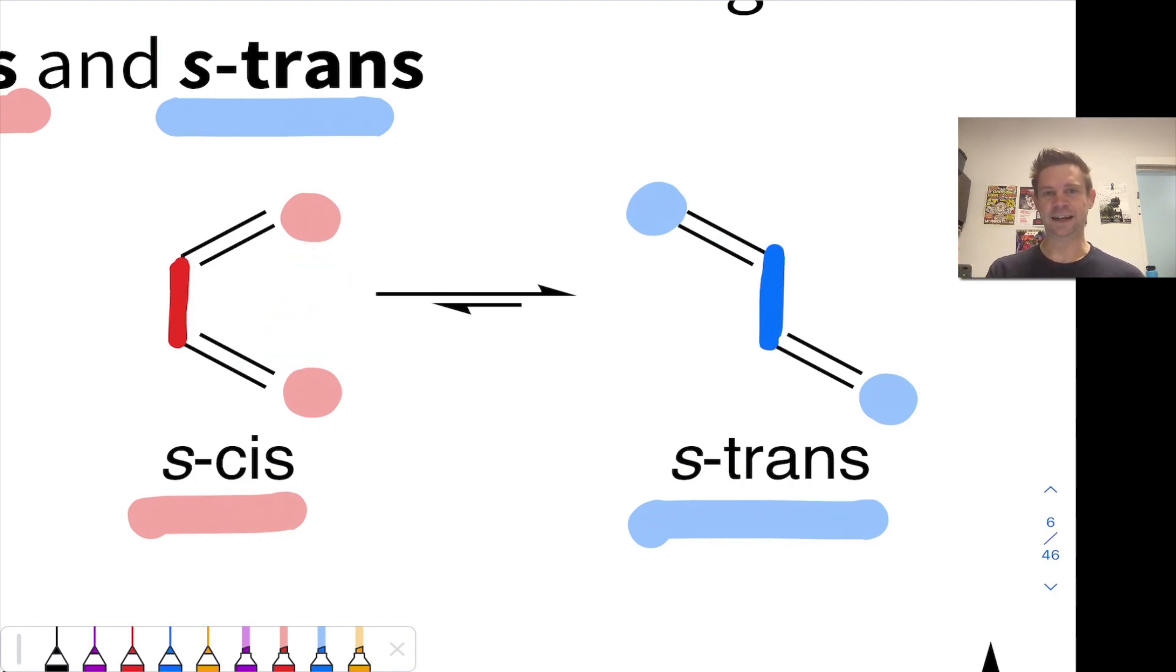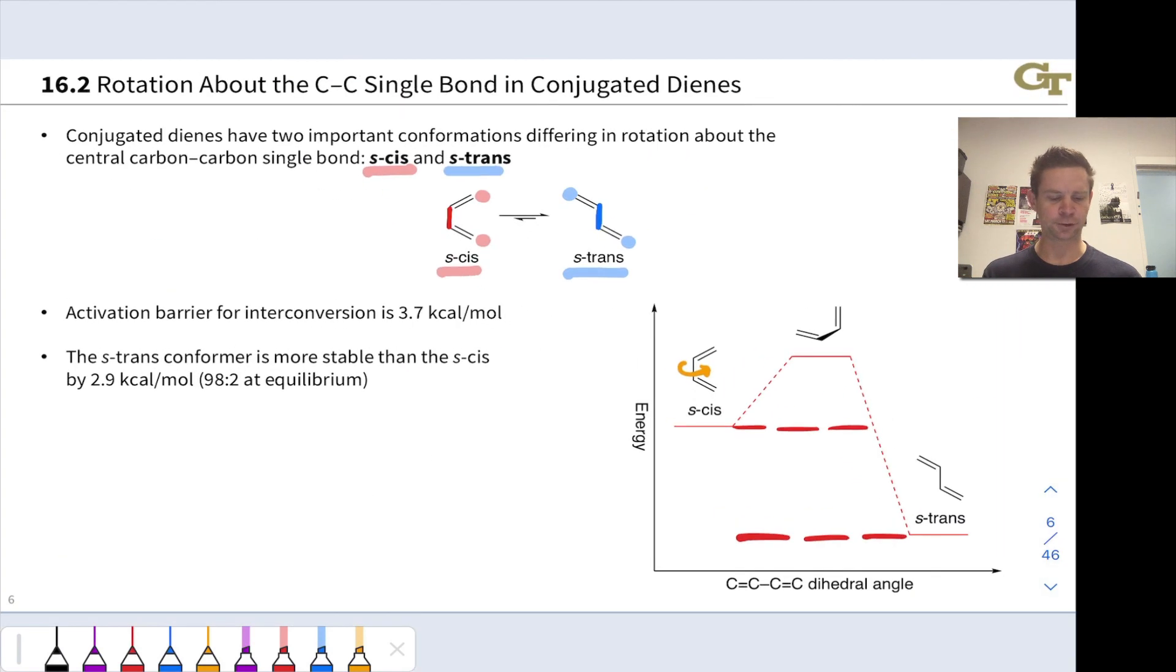We alleviate that steric interaction in the S-trans conformer where one of the CH2 groups has swung around to the other side. So the S-trans conformer is more stable for steric reasons than the S-cis conformer to the tune of about 98 to 2 at equilibrium. That energy difference on this conformational potential energy diagram is right here, 2.9 kilocalories per mole.